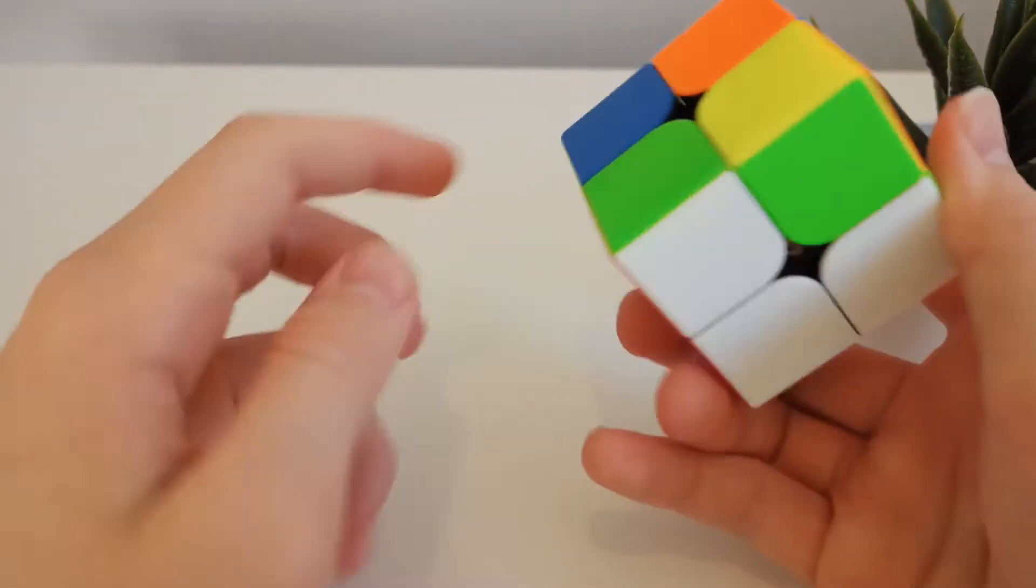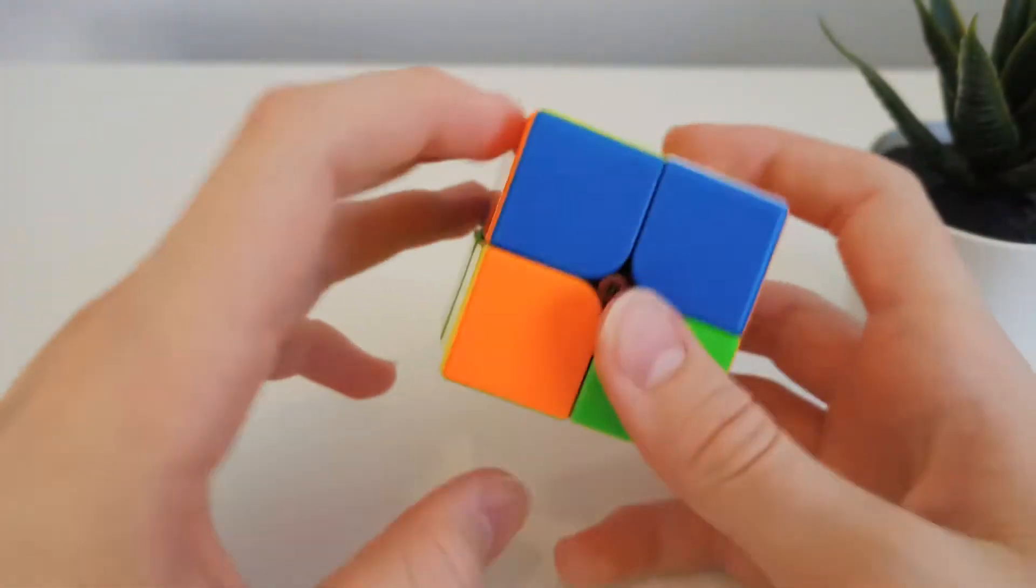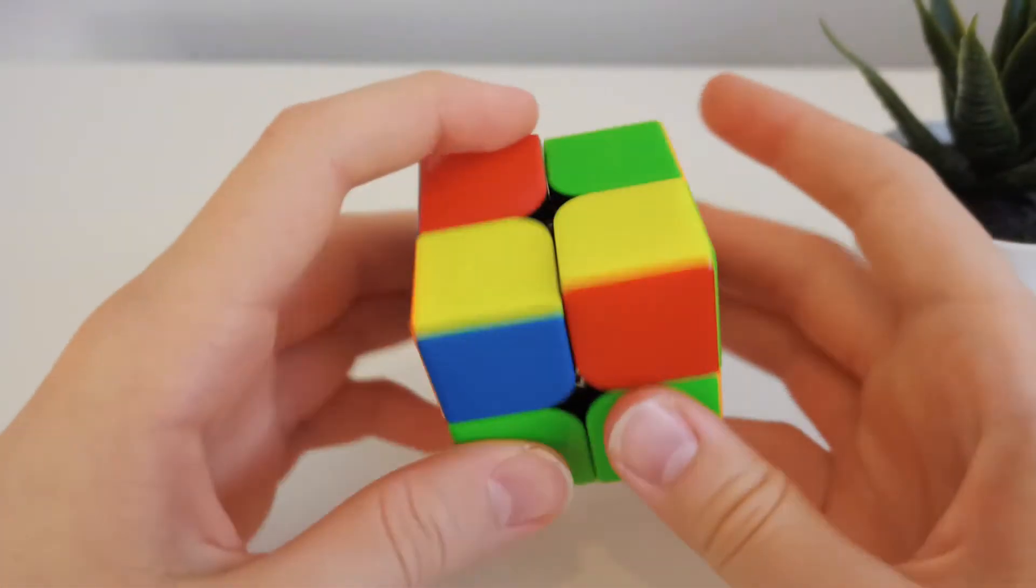This only works on Ortega because it does permute the pieces as well, but you can actually just join it up and then insert it like that. Super easy.